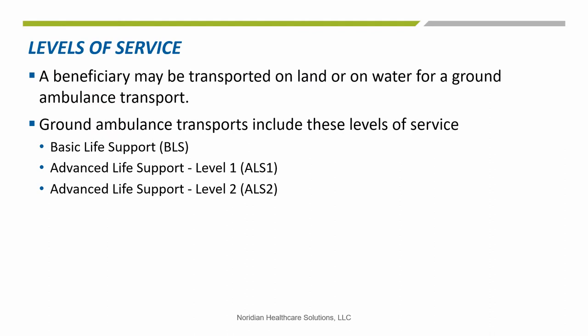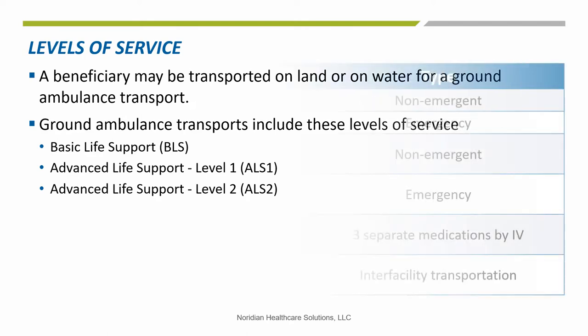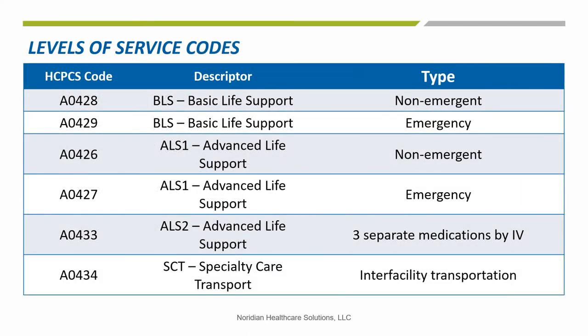A beneficiary may be transported on land or on water for a ground ambulance transport. Ground ambulance transports include these levels of service: Basic Life Support (BLS), Advanced Life Support Level 1 (ALS 1), and Advanced Life Support Level 2 (ALS 2). The categories and HCPCS codes applicable for each level of service are listed here. Ambulance service levels are distinct and separated by the equipment and supplies carried in the transport and by the training qualifications of the crew.